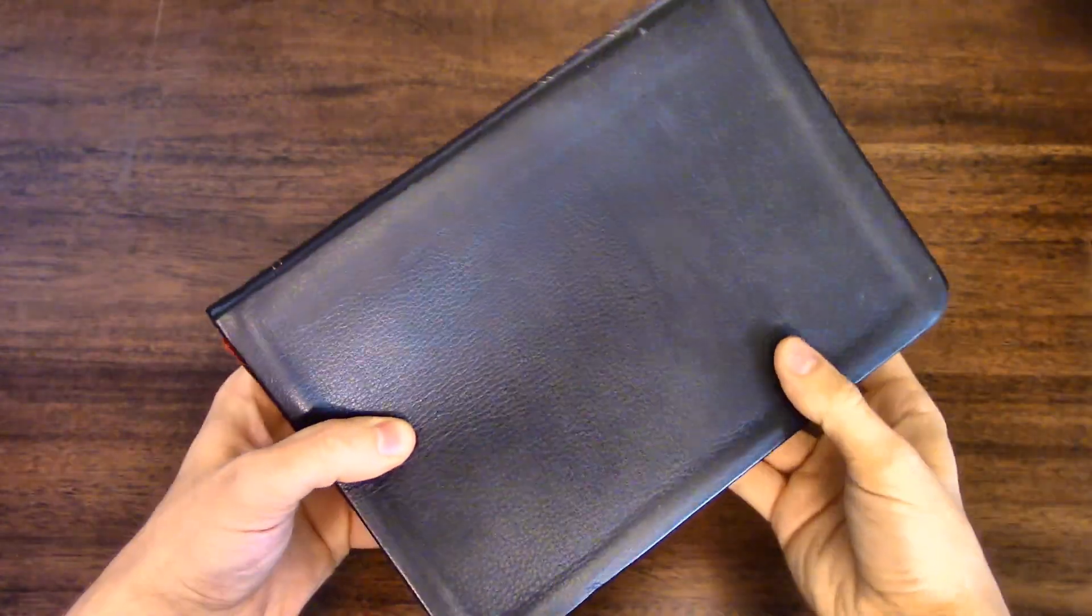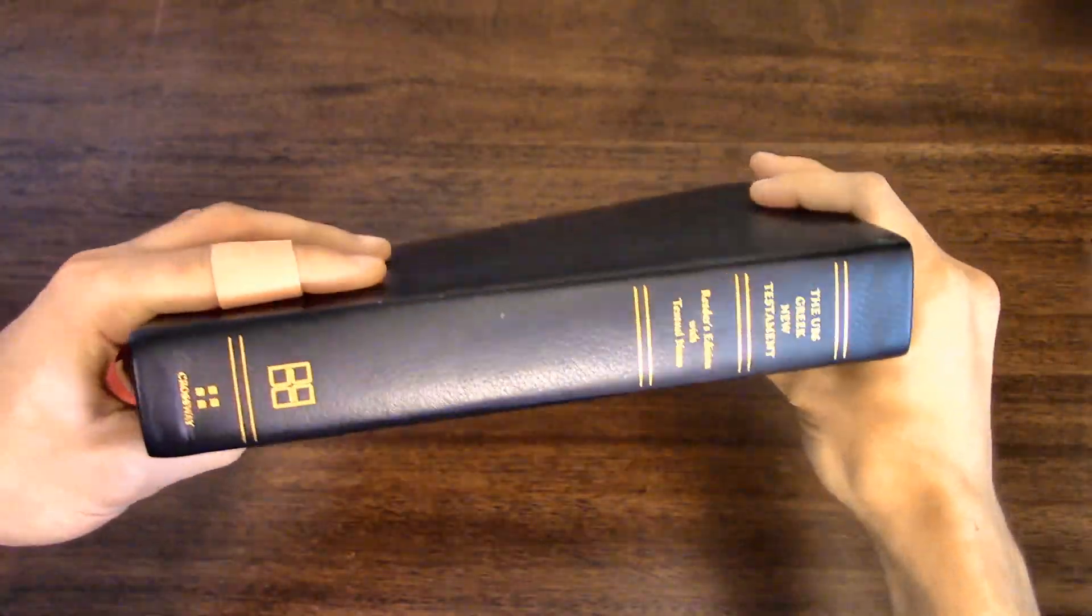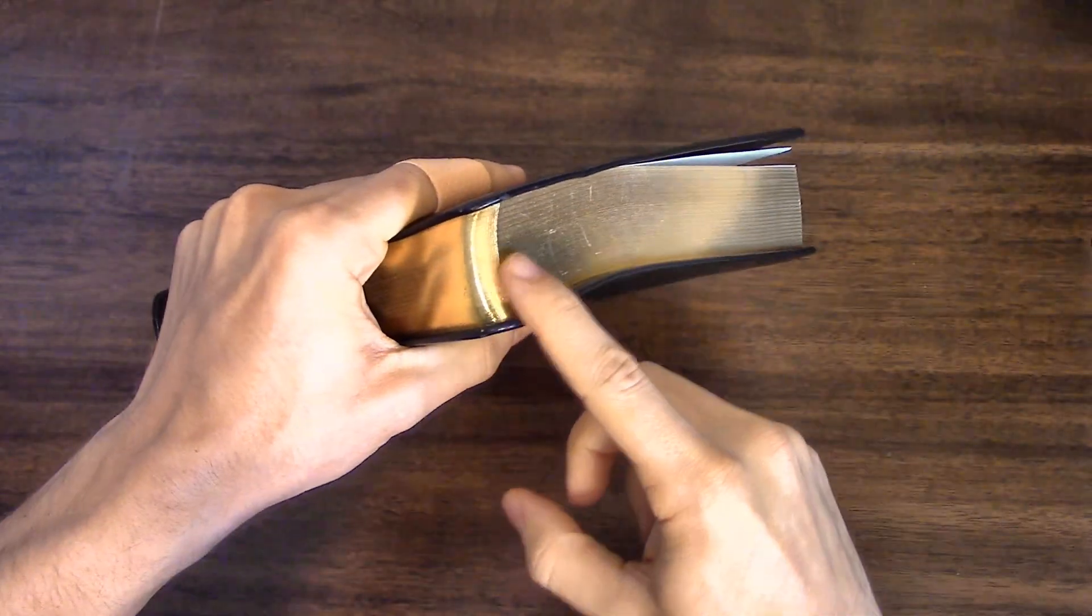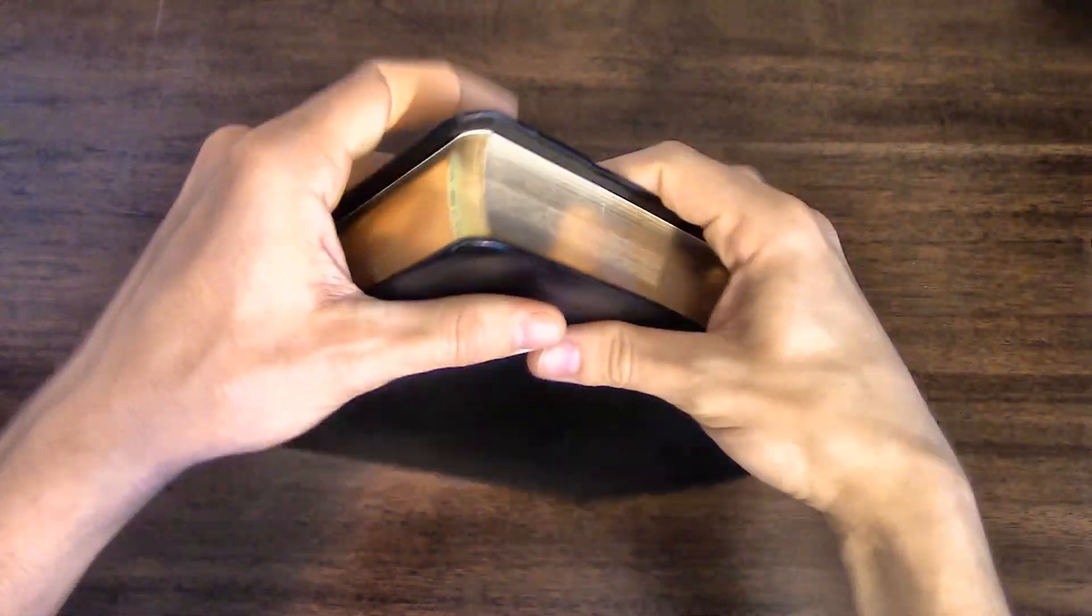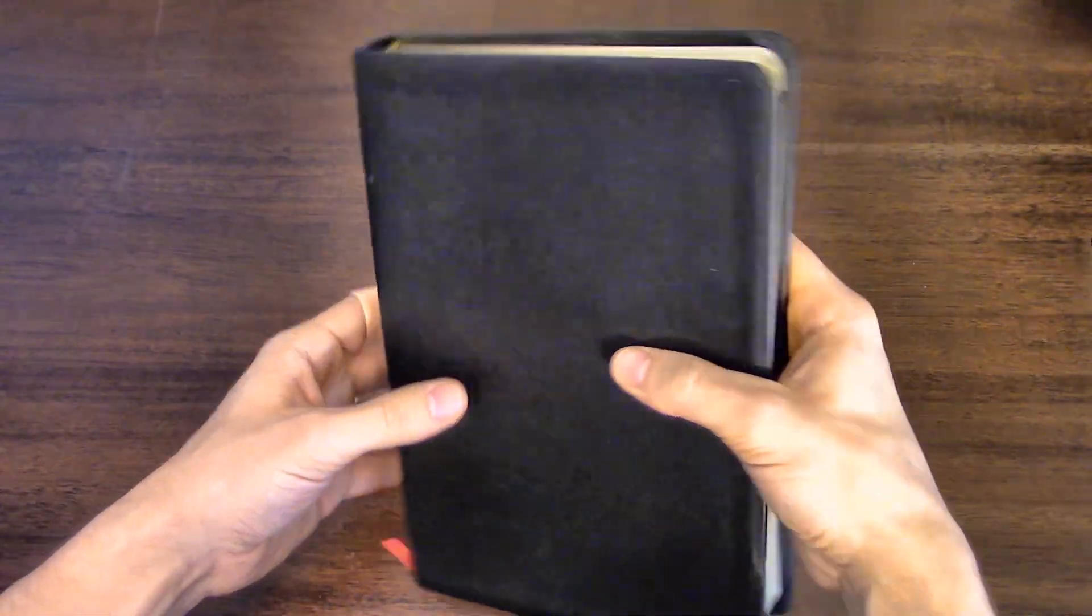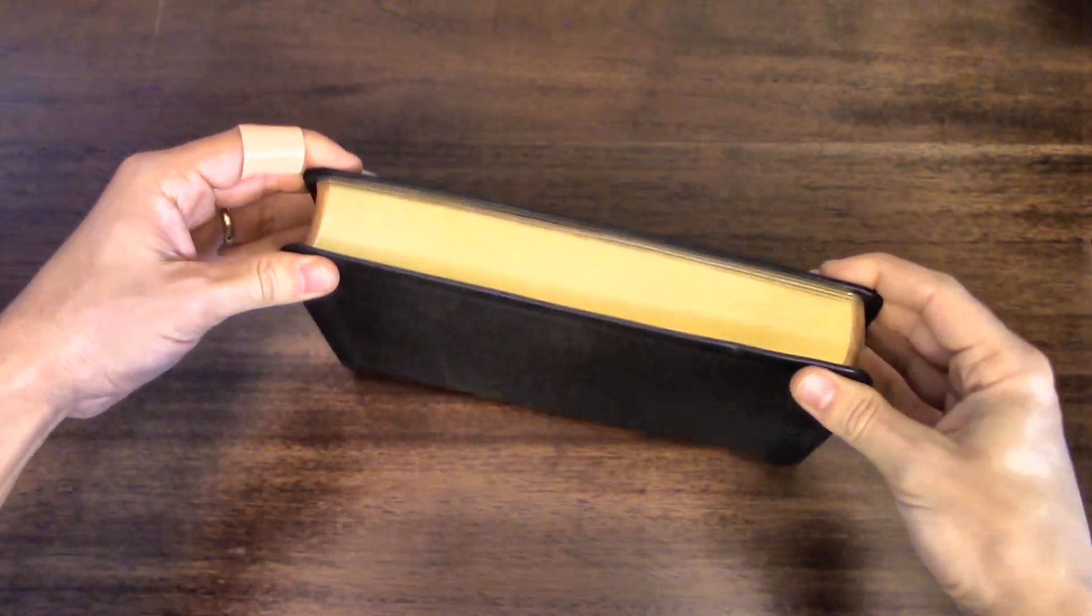So just give you a look at the exterior there. You can see the gold on the spine. It's got a red ribbon. What's really unique about this text block is that it has gold page edges and rounded corners, which is really hard to find in a Reader's Greek New Testament. There's really only a couple text blocks that are going to get you that.